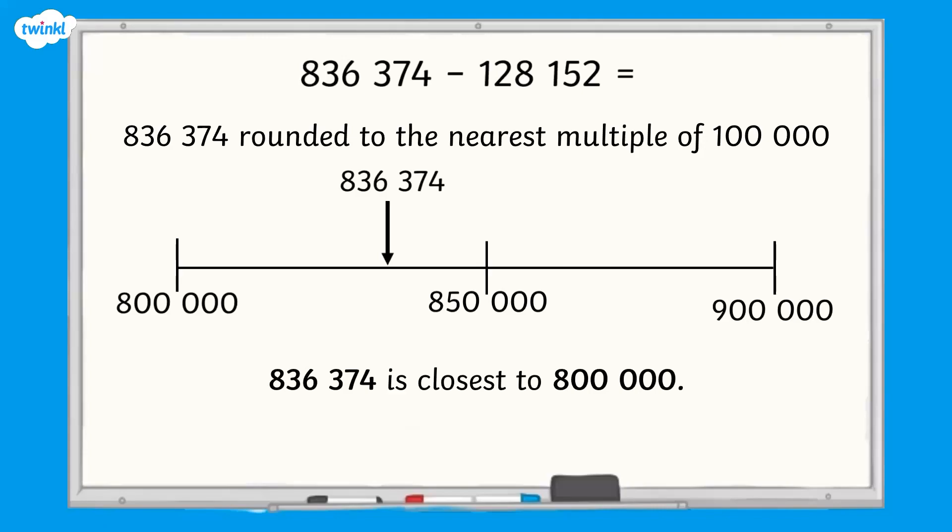836,374 is closest to 800,000. So 836,374 is 800,000 when rounded to the nearest multiple of 100,000.